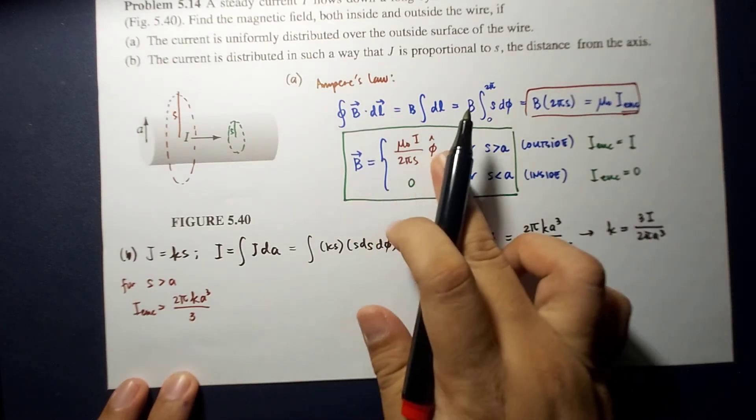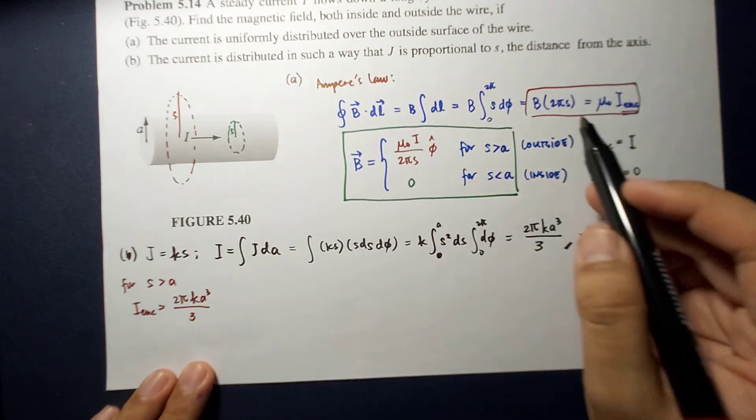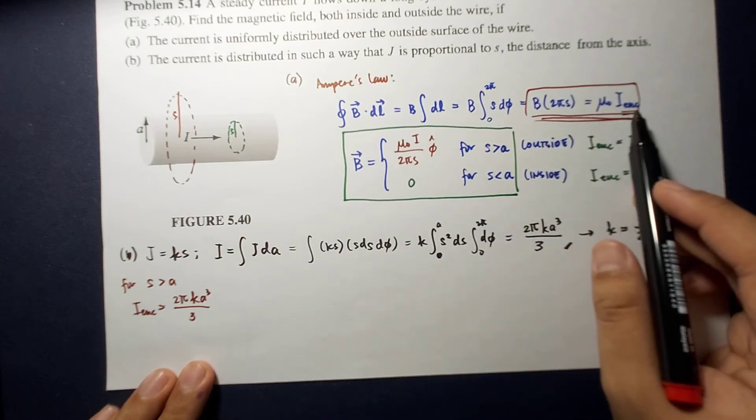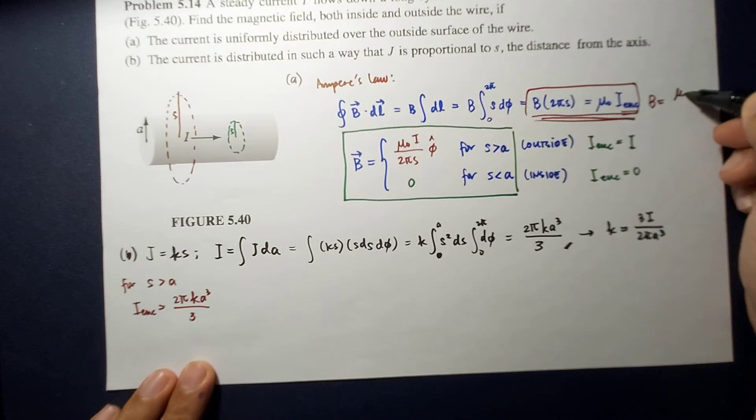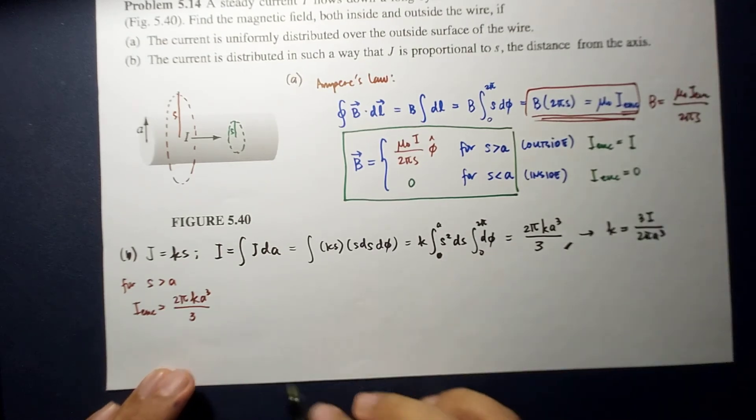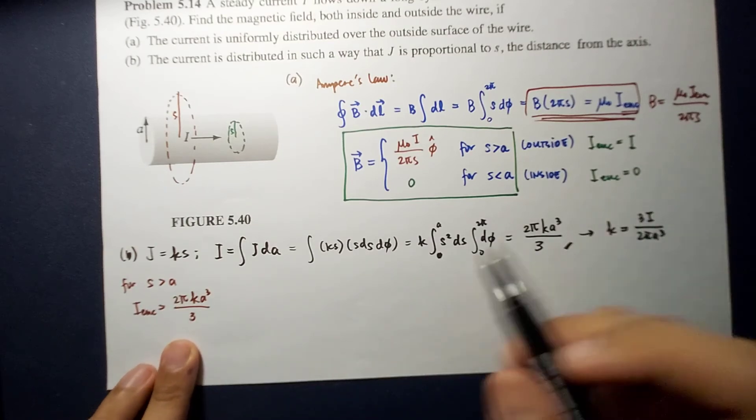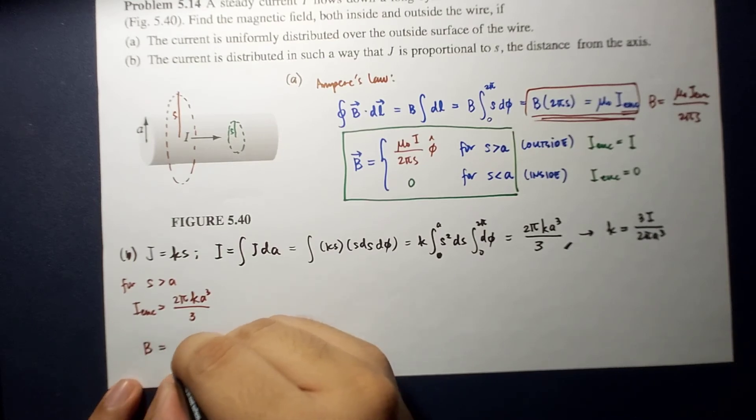2 pi K A cubed over 3. So, B is equal to mu I enclosed over 2 pi S. So, substituting this here,